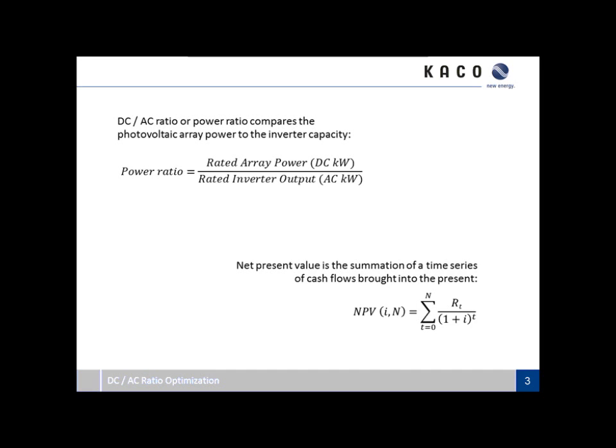DC to AC ratio, or the power ratio, is basically the maximum rated array power in DC kilowatts compared to the maximum rated inverter capacity. So it's the size of the rated DC array maximum compared to the rated inverter output. But we'll be looking at how net present value is affected by changing that DC to AC ratio. Net present value is, of course, the time series of cash flows — revenues and expenses — brought into the present via some discount rate, as shown in the equation here.